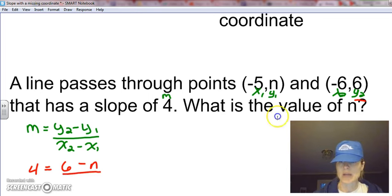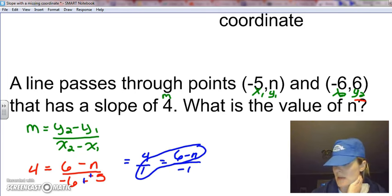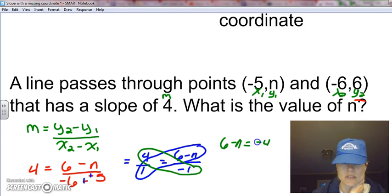We know our y2 here is 6 minus our y1, which is the variable n, that gets placed over my x2, which is -6, and subtract that from my x1, which is -5. So basically we've got to solve what we know. We know that two negatives make a positive, so I have 4, or we can say 4/1 equals (6-n) over, and then here we have -6 + 5, which is -1. We can think about solving this a couple different ways. We're trying to find n here, so this looks like a proportion and we could actually solve it as such if we wanted to, where we cross multiply here.